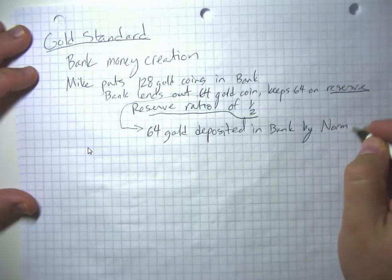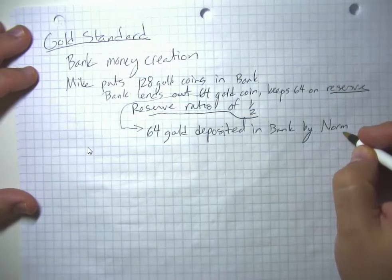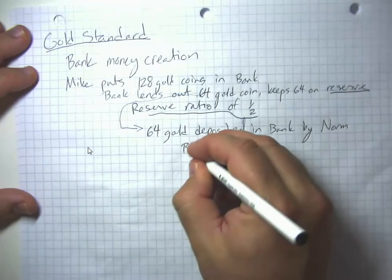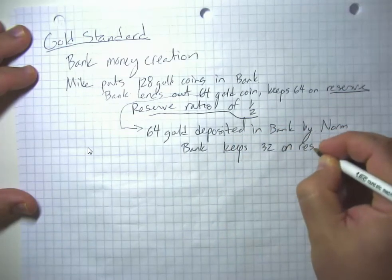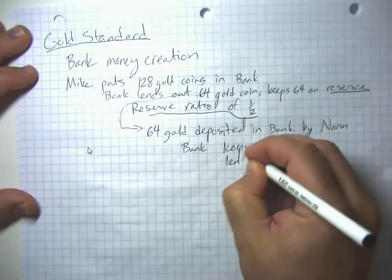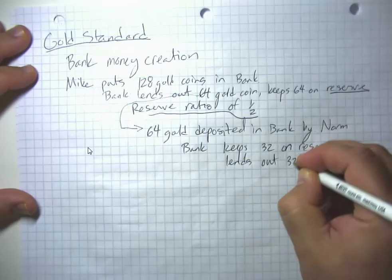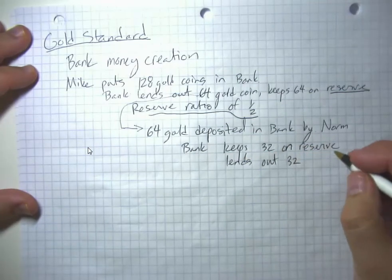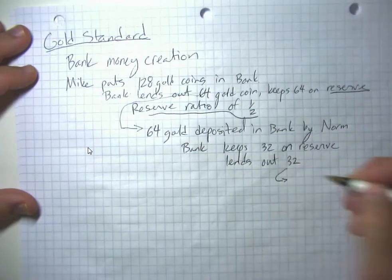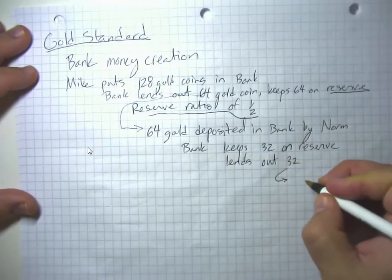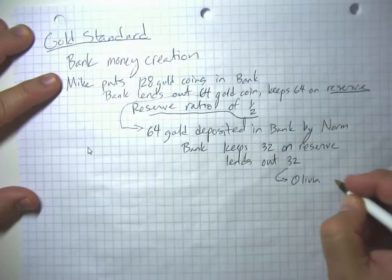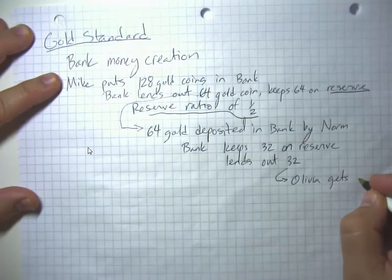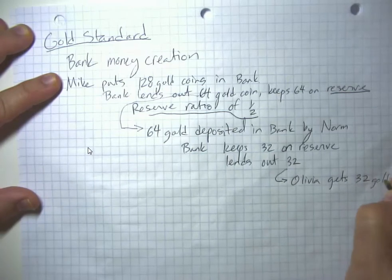Norm deposits that in the bank and gets a receipt where the bank tells him that it has $64 in his checking account. Then the bank keeps 32 on reserve and lends out 32, operating with a reserve ratio of one-half. This ends up being paid out to Olivia. Norm buys something from Olivia, and she gets 32 gold and deposits it.